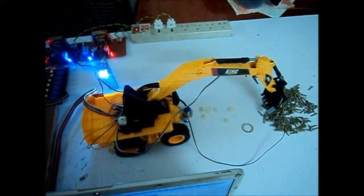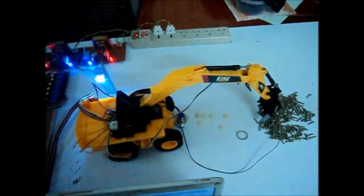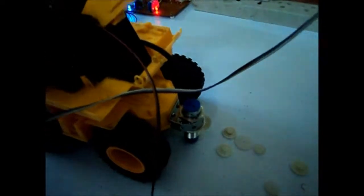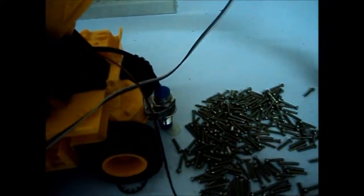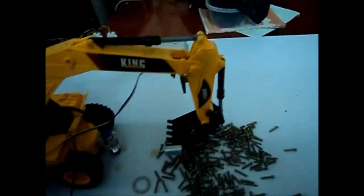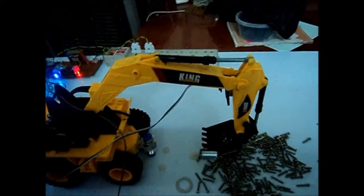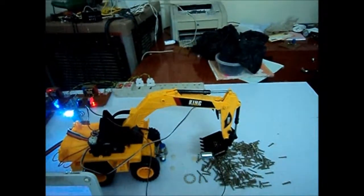Again go straight and then again the process starts. So here is the metal detector which detects metal. As the metal is detected it comes back, it drills, lifts the object and goes back and performs it.